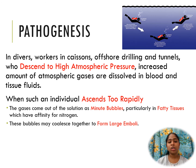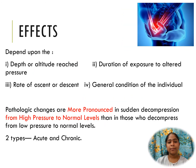In aero embolism, seen in those who ascend to high altitudes or travel by air flight in unpressurized cabins, the individuals are exposed to sudden decompression from low atmospheric pressure to normal levels. This decompression sickness results in similar effects as in divers and workers in caissons. The effects of decompression sickness may depend upon the depth or altitude reached by the diver or worker, the duration of exposure to the altered pressure, the rate of ascent or descent, and the general condition of the individual. Pathological changes are more pronounced in sudden decompression from high pressure to normal levels than in those who decompress from low pressure to normal levels.